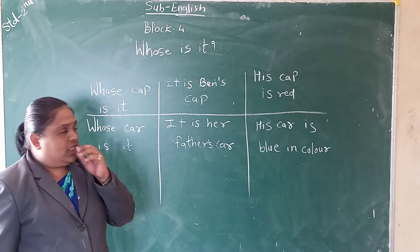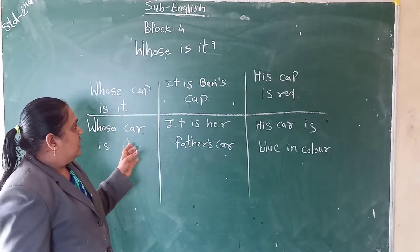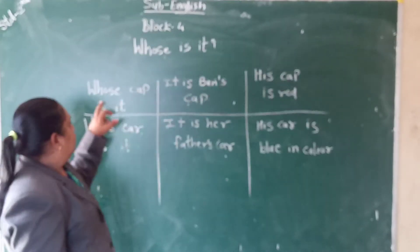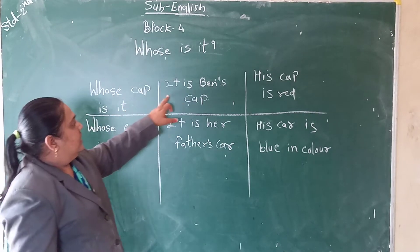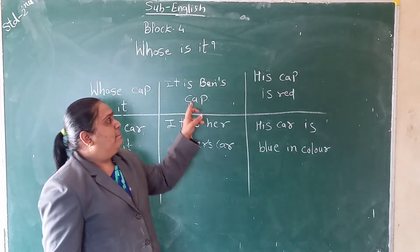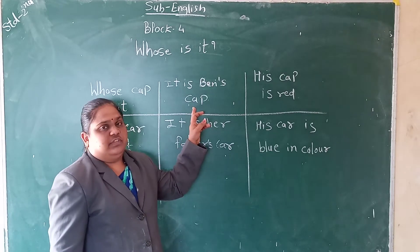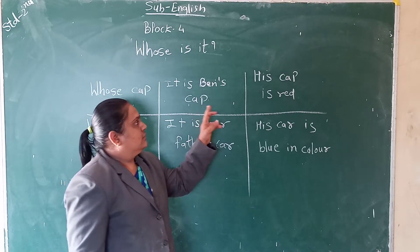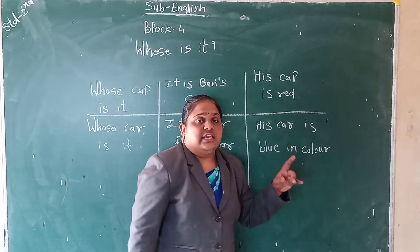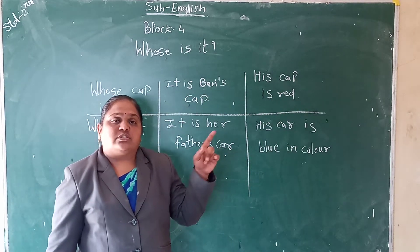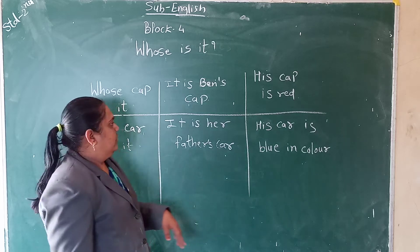In this also, we will see some things that belong to Ben's. Whose cap is it? It is Ben's cap. The cap was Ben's, so it is of Ben. His cap is red. The cap belongs to Ben and his cap is red.